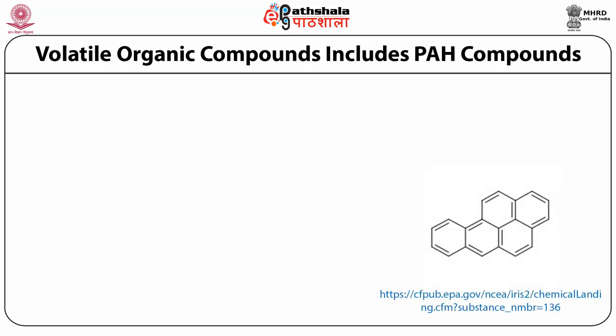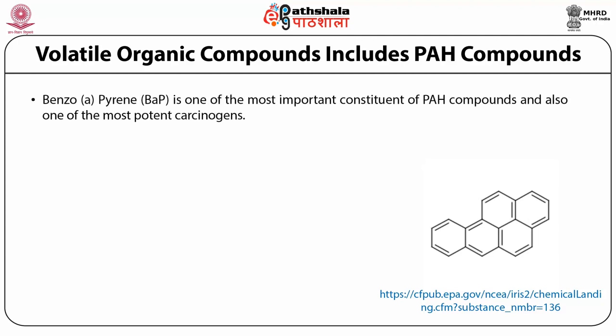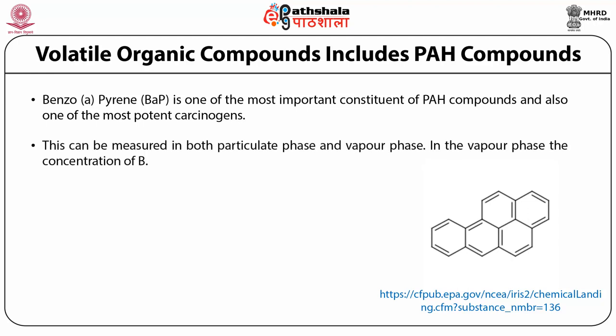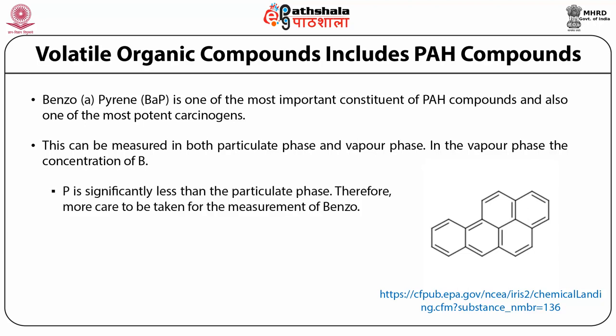VOCs include PAH compounds — polyaromatic hydrocarbons. Benzo[a]pyrene, denoted as BAP, is one of the most important constituents of PAH compounds and also one of the most potent carcinogens. It can be measured in both the particulate phase and the vapor phase. The concentration of benzo[a]pyrene in the vapor phase is significantly less than in the particulate phase, so more care should be taken for its measurement in the particulate phase.